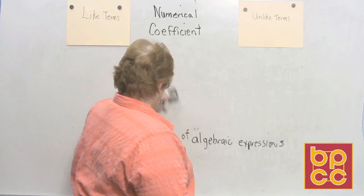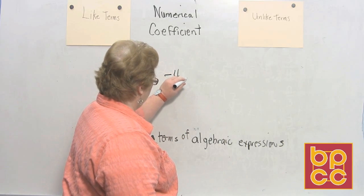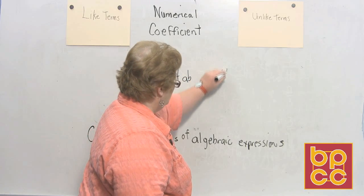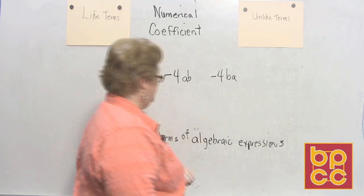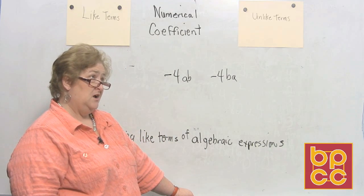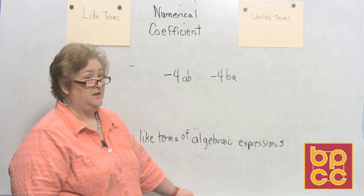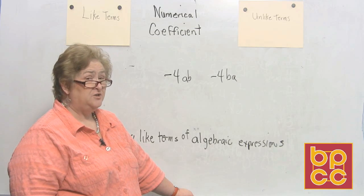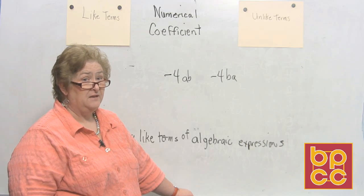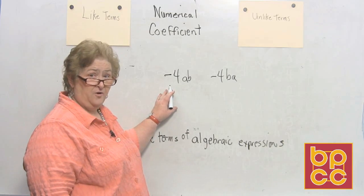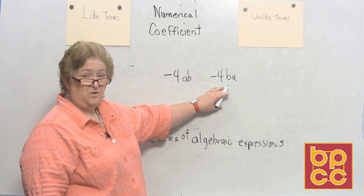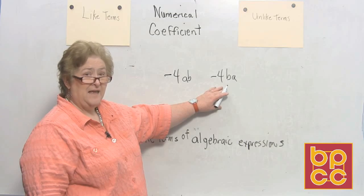I'm going to try to fool you on this one. Let's say we have a negative 4ab and a negative 4ba. If you say unlike, you might want to think again — because based on the commutative property, ab and ba mean the same thing. It's not about the negative 4; ab and ba are the very same. So these would be like terms.